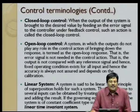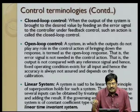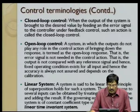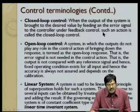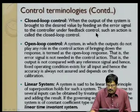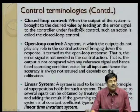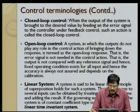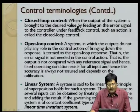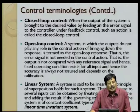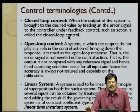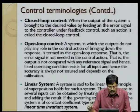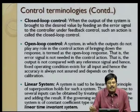A closed loop control system is the most efficient control system — when the output is brought to a desired value by feeding the error signal to the controller under feedback control. An alternative is open loop control, where outputs do not play a major role in the control action — the error signal is not needed, the output is not compared with any reference signal, and hence accuracy is not always assured.